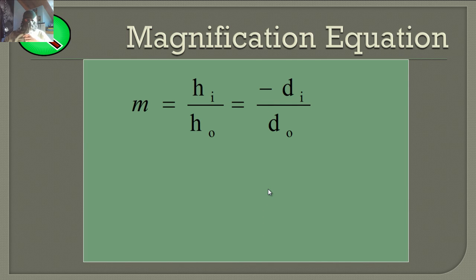We also have the magnification equation: m, the magnification number, equals the image height divided by the object height, which also equals the negative of the image distance divided by the object distance. m is not going to have any units because the meters cancel out — it's just going to be a number.